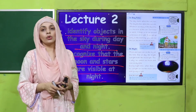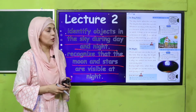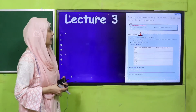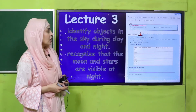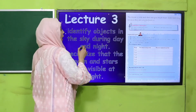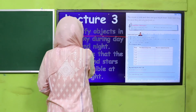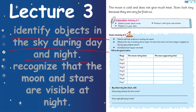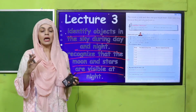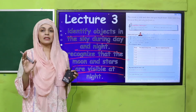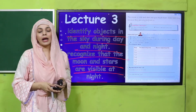In Lecture Number 2, we will learn more about objects in the sky. Then in Lecture Number 3, we will do an activity to identify objects in the sky during the day and night, and recognize that the moon and stars are visible at night. Is tarikay se bachche din aur raat mein jo cheezein aasman peh nazar aati hain unko activity se zahir karenge.